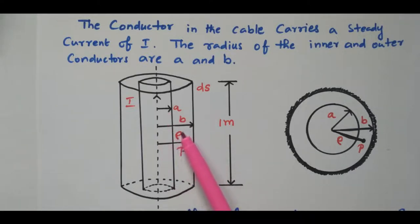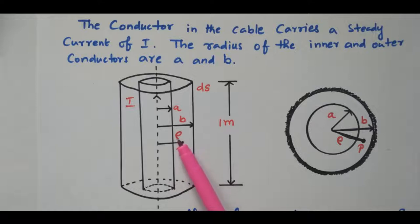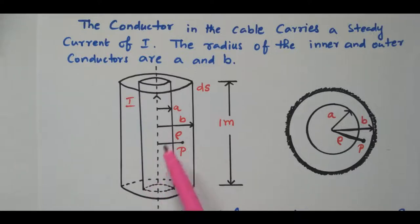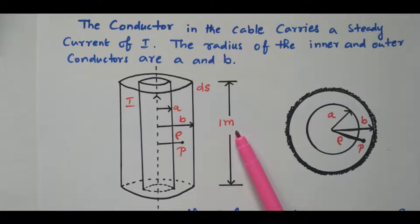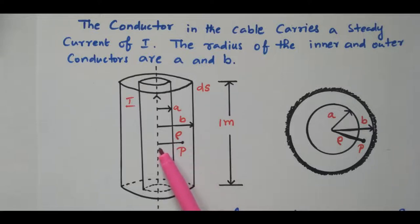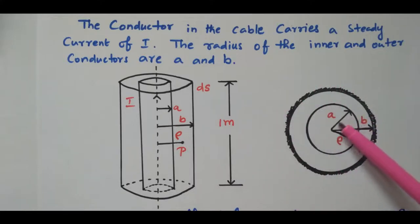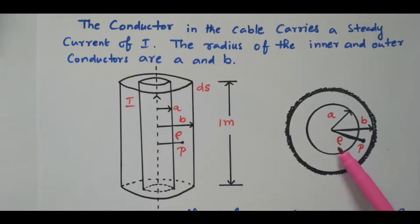At point P the radius is rho meters, located between A and B. The current I is flowing through the inner conductor with radius A, and the outer conductor has radius B. The length of the cable or conductor is 1 meter. Point P is located at a distance rho meter from the axis of the cable.